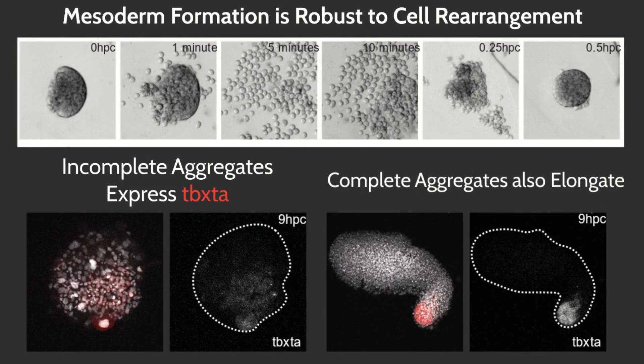We observe that when we fail to re-aggregate all the cells together, explants still reproducibly express TBXTA. On rare occasions when we re-aggregate all the cells together, our explants both elongate and express TBXTA.